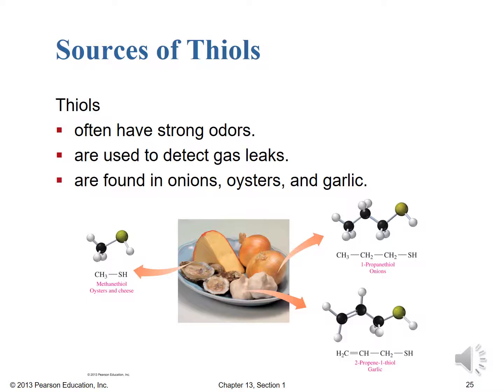As unbelievable as it may seem, thiols are also important components of onions, oysters, and garlic — in small amounts they contribute to the bouquet of those foods. If you've cut raw onions, that sulfury odor is the thiol. 1-propanethiol is found in onions, 2-propene-1-thiol in garlic, and methanethiol tends to be in oysters and cheese.